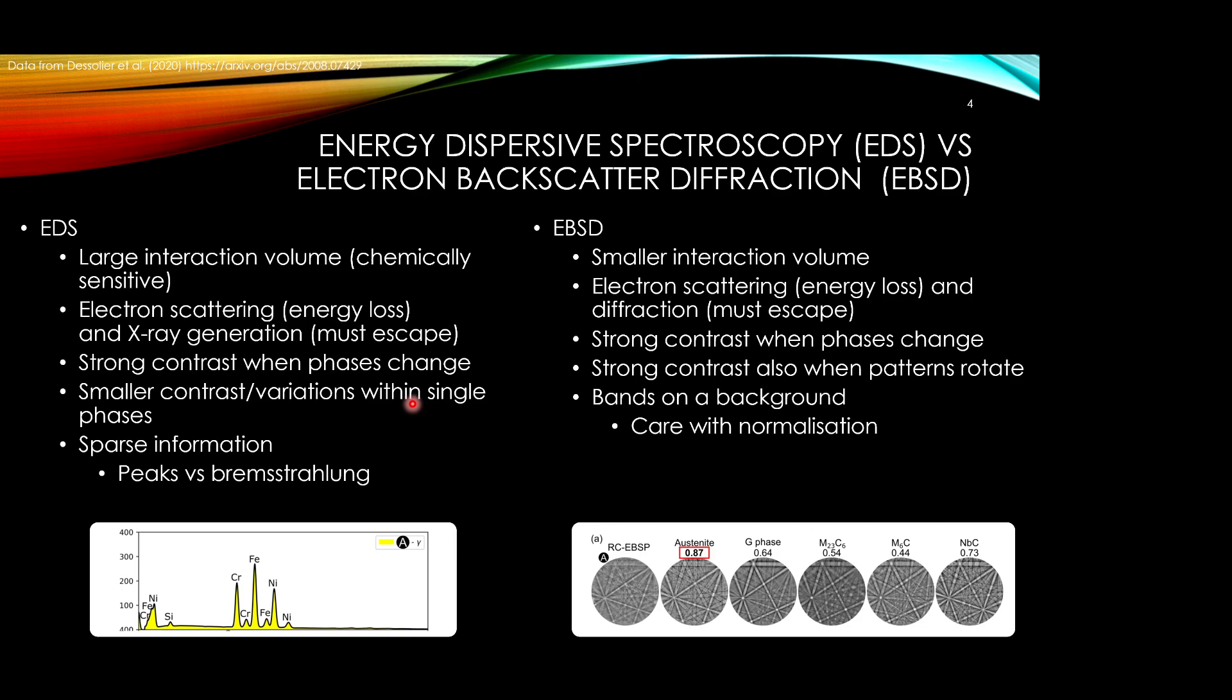So how can we improve this? We can consider that the energy dispersive spectroscopy technique fundamentally has a larger interaction volume, although that's chemically sensitive. It's generally produced by electron scattering and then promotion of the core electron falling back down and the generation of the characteristic x-ray. This x-ray must escape the sample, creating the characteristic x-rays ahead of the Bremsstrahlung. You get relatively strong contrast if the phase changes because the chemical speciation according to each phase will vary significantly. Within a phase you may have small gradients associated with chemical coring of your precipitate or dendrite. It's a relatively sparse data space because there are relatively few peaks present above the Bremsstrahlung.